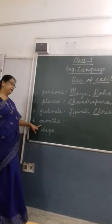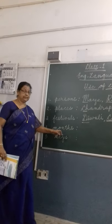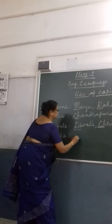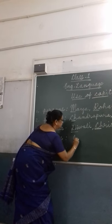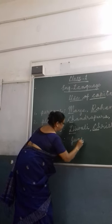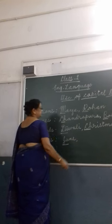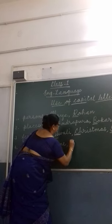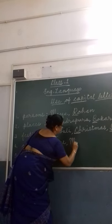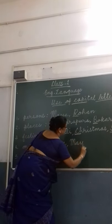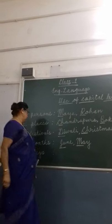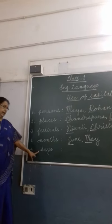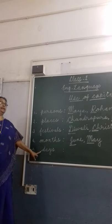Then for month names — when we write a month's name, the first letter should be capital. This month is June, so when we write June, J should be in capital. Next month will be July — J capital. Last month was May — M capital. So when we write the name of a month, the first letter should be capital.